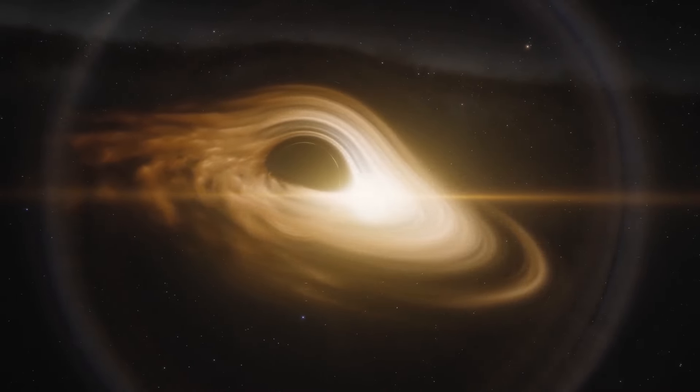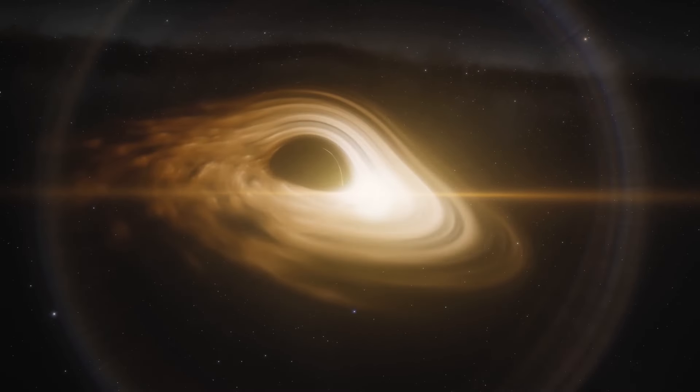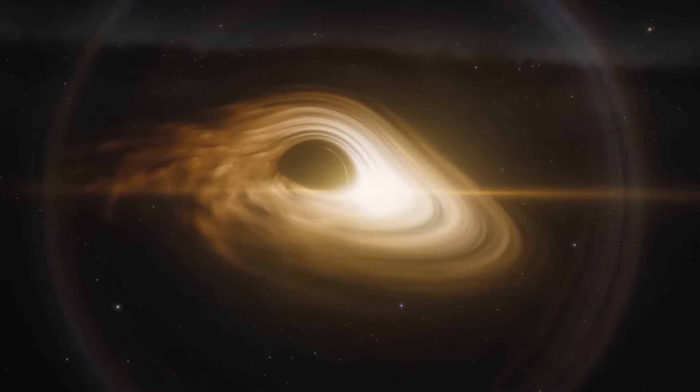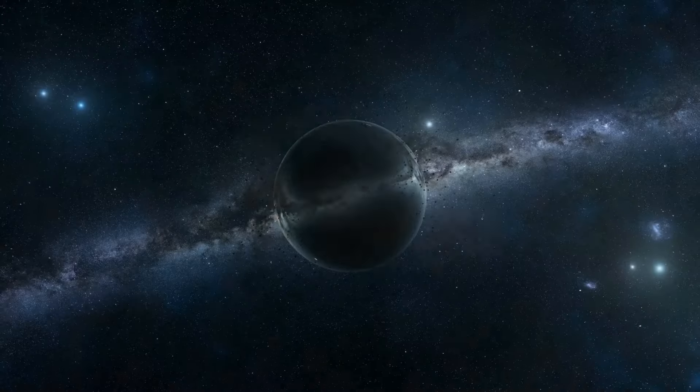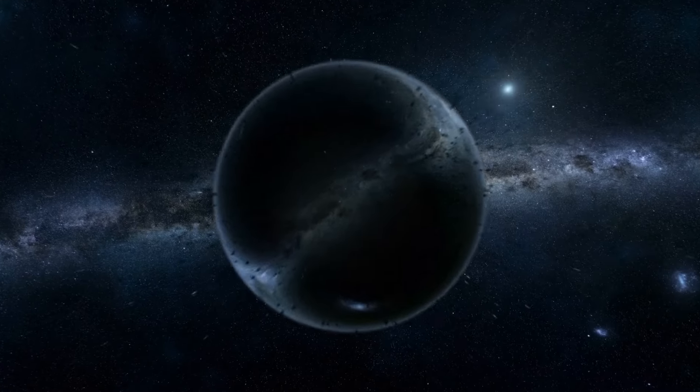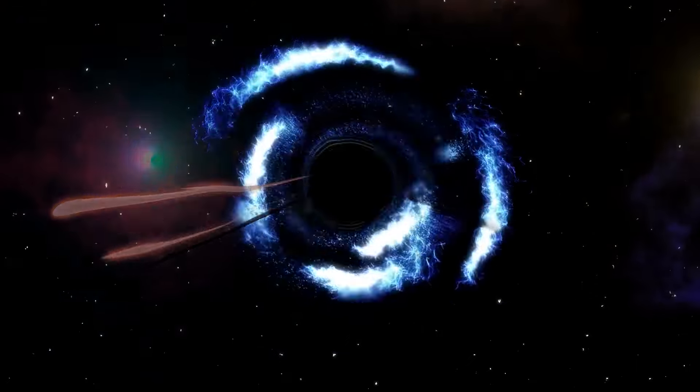The reason for this is that wormholes are inherently unstable and would collapse almost instantaneously. However, if a stable Einstein-Rosen bridge existed, it would mean that black holes are not only cosmic devourers, but also portals that could connect us to other regions of spacetime.